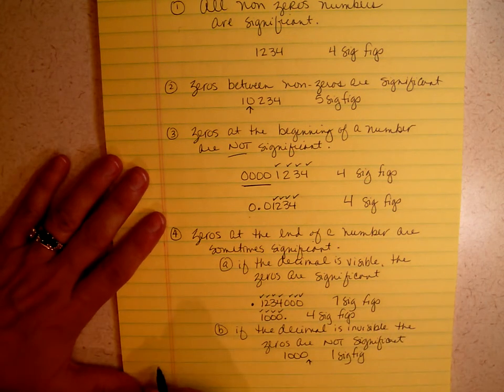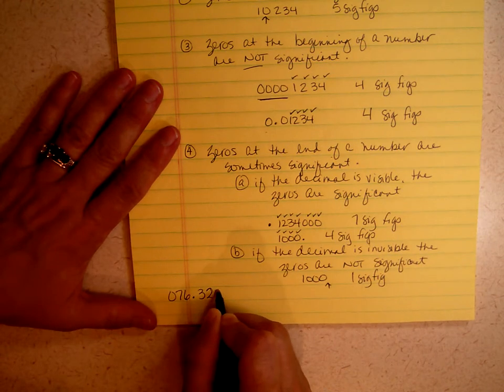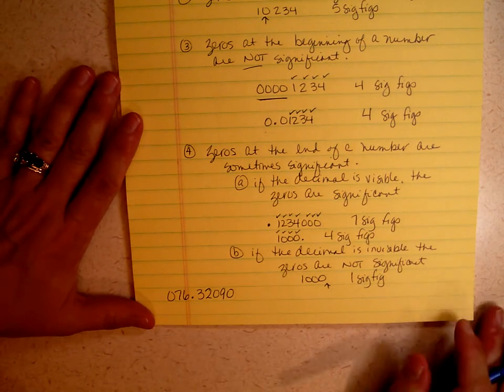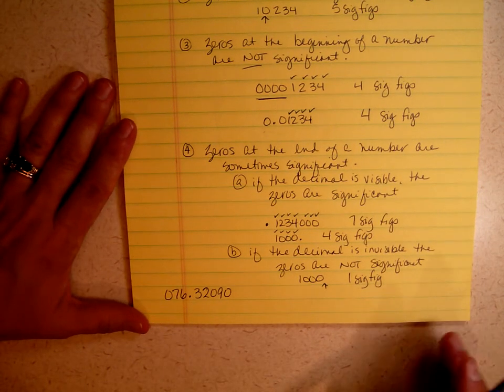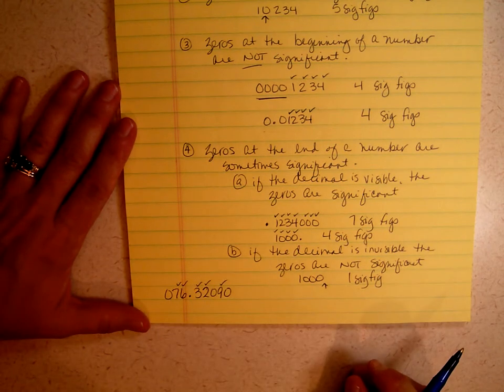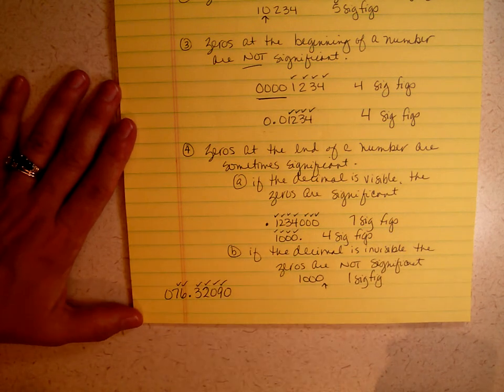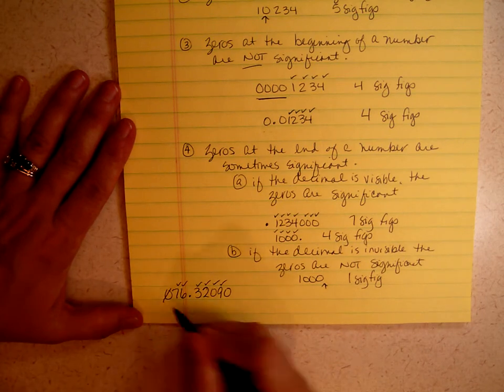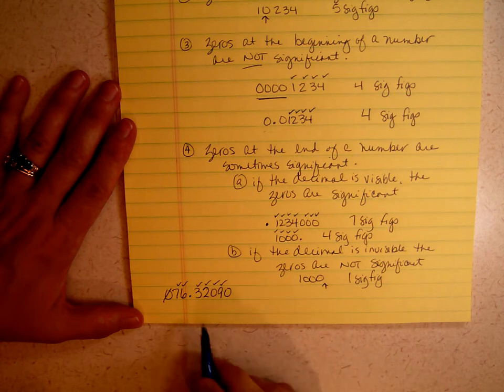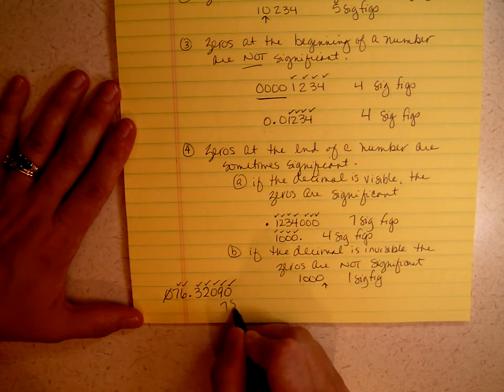Let's do one more problem. How many significant figures? And zeros at the end are sometimes significant. If the decimal is visible, they are significant. So this number has 1, 2, 3, 4, 5, 6, 7 sig figs.